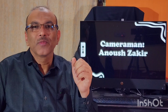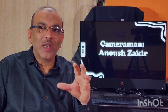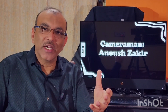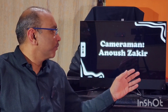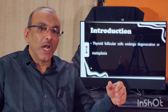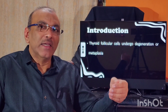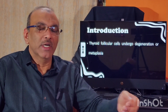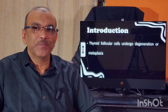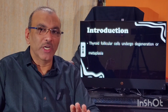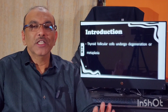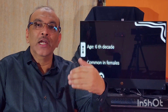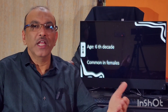These normal follicular cells can degenerate or undergo metaplasia, resulting in the formation of Hurthle cells. What causes this degeneration or metaplasia? The cause is not known. This condition is usually seen in elderly patients and is more common in females.